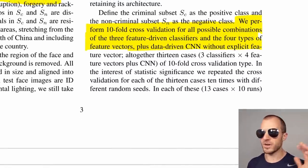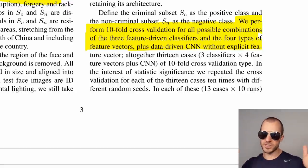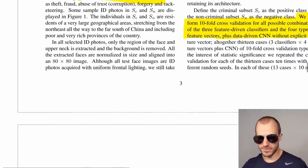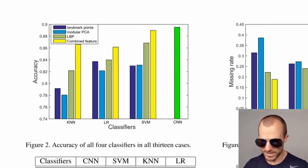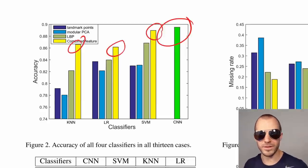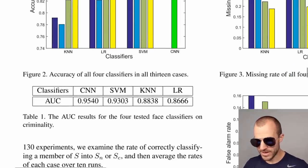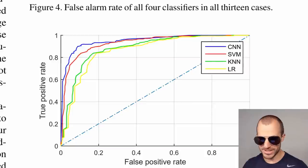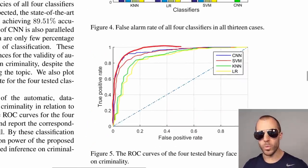They perform a 10-fold cross-validation for all possible combinations of three feature types, four classifiers, and the data-driven CNN. Cross-validation means you partition your data into 10 parts, take nine to train and predict on the one held out, then repeat — this gives you a train/test split across all sorts of data splits, which is a valid thing to do. They discover their CNN classifier performs at almost 90% accuracy, and even their SVM and other classifiers perform fairly well in recognizing criminality from faces.